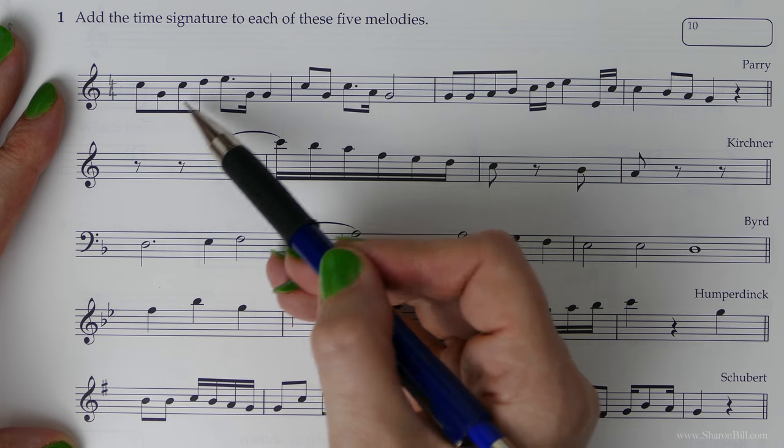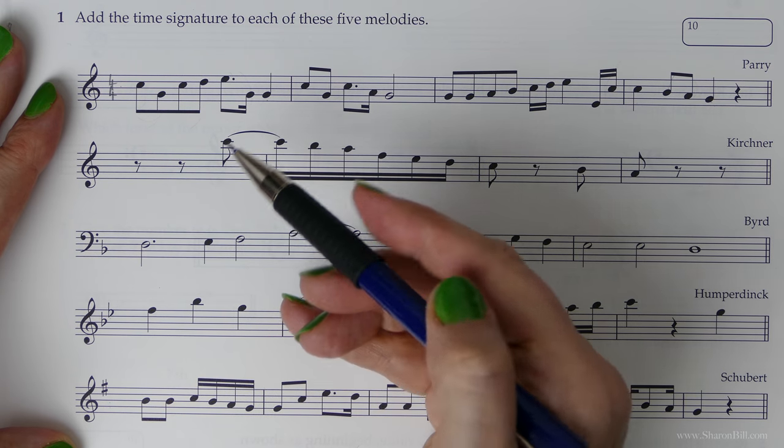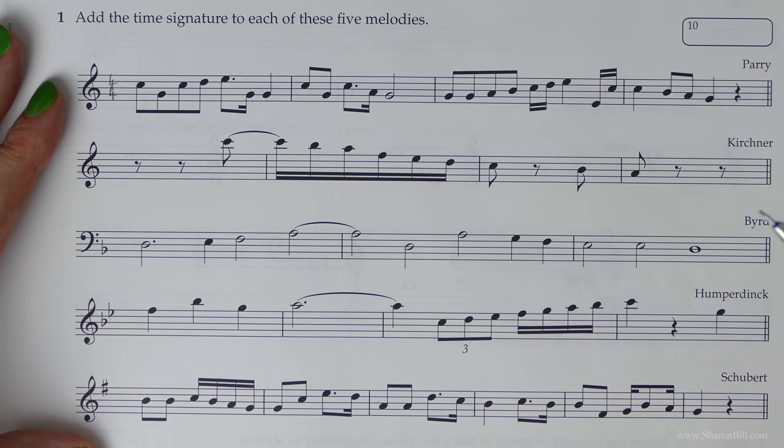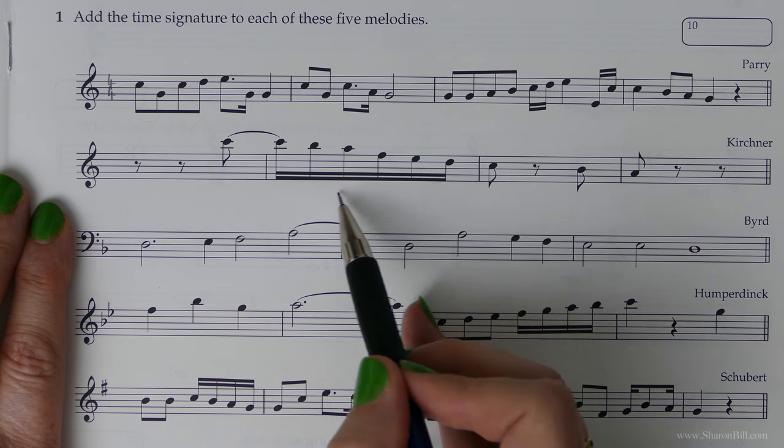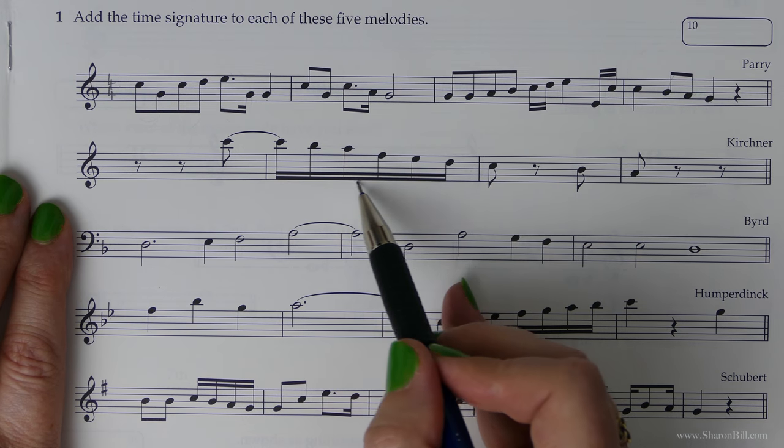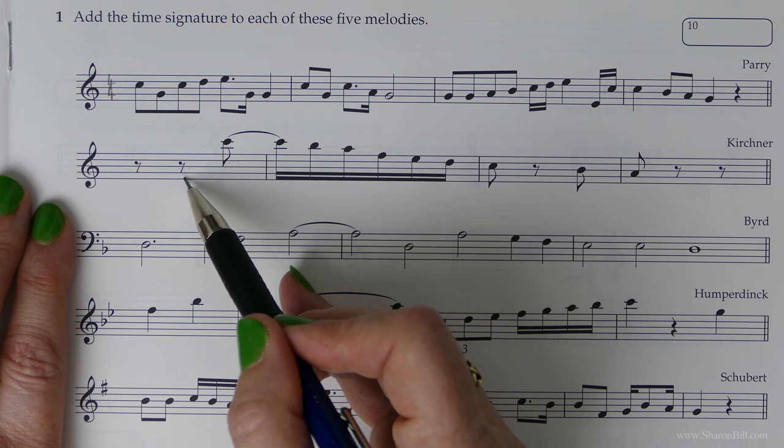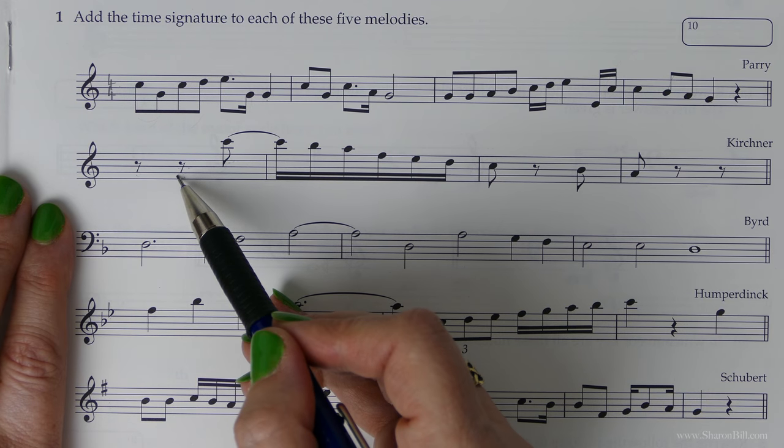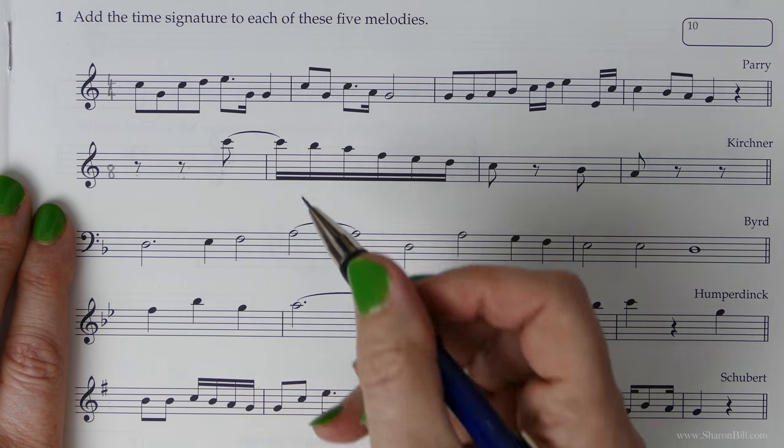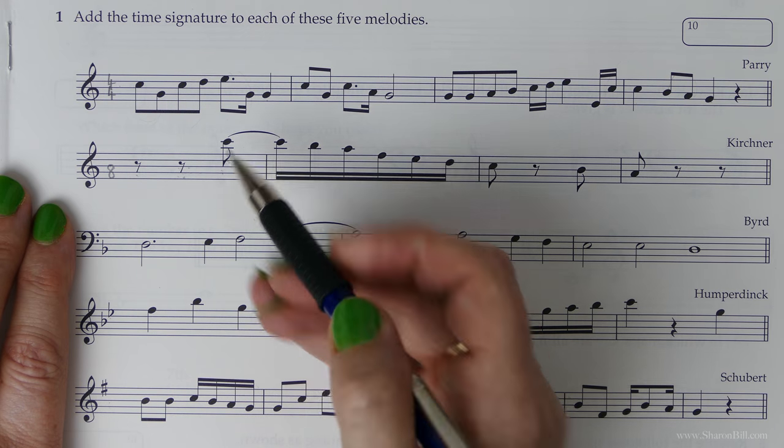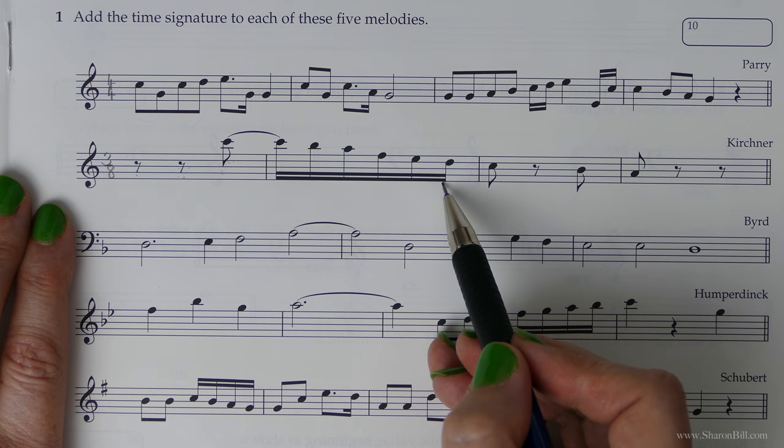So our bottom number is four and our top number also is four. We've got one crotchet beat or quarter note, two, three, four. We can see it's divided and grouped in that manner. Let's have a look at the next bar. Here, this bar gives us a clue straight away because everything's beamed together. And this first bar also gives us a clue. We're counting in quaver beats or eighth notes. There are one, two, three. But we also know that because three-eighths is the only time signature where we can just beam everything together in one bar.